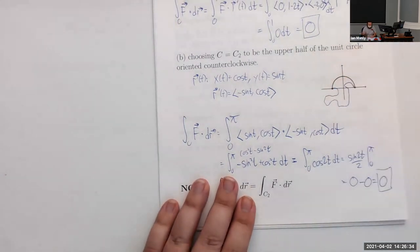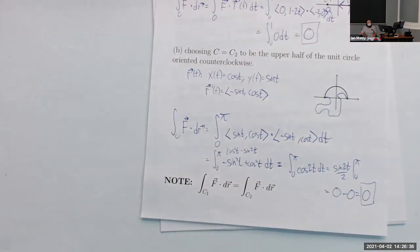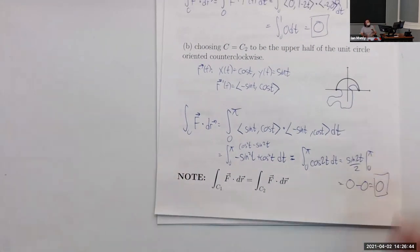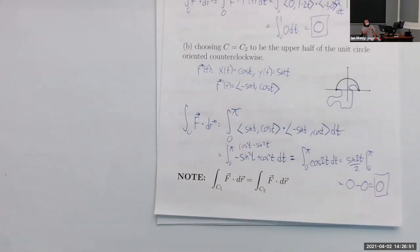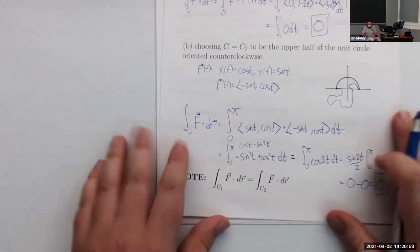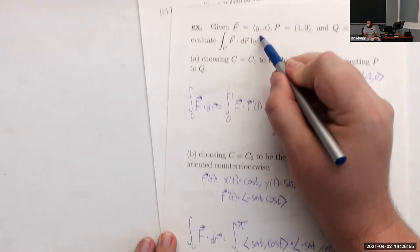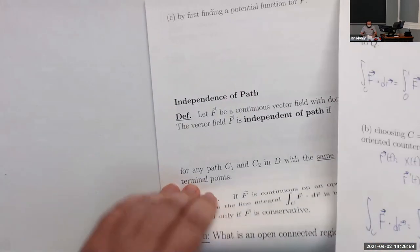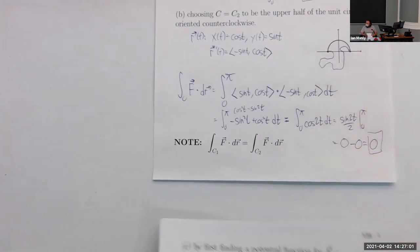No matter which path we take, we end up with the same value. Maybe that seems like a coincidence for these two paths, but it's not — it's because f is conservative. That's what's going to bring us to our next theorem.